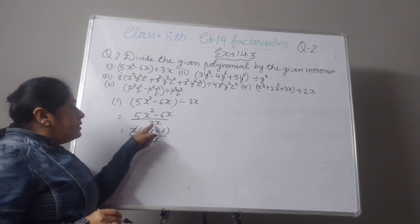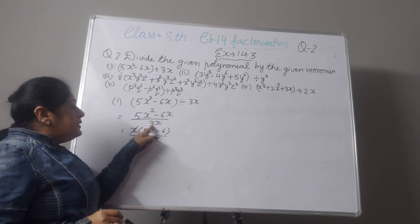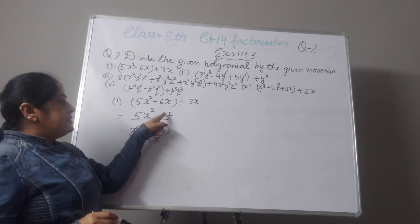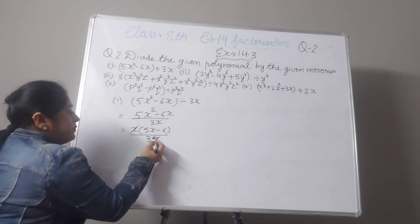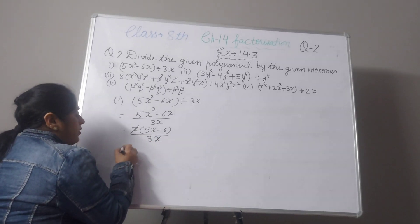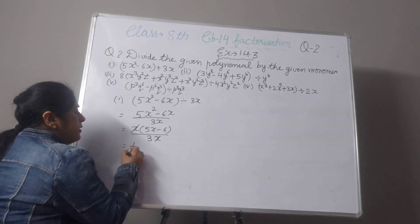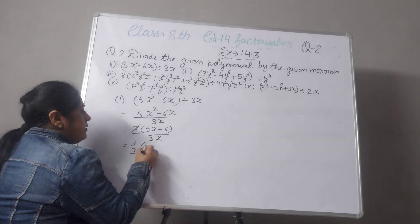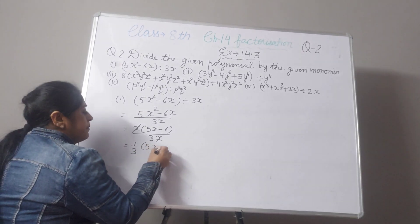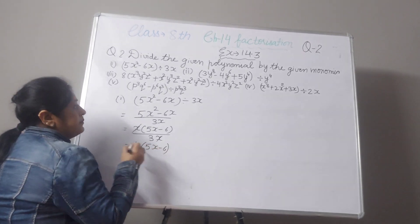Don't cut the 3x by 6x and write 2x — that will be wrong. Our answer will be one-third times (5x minus 6).